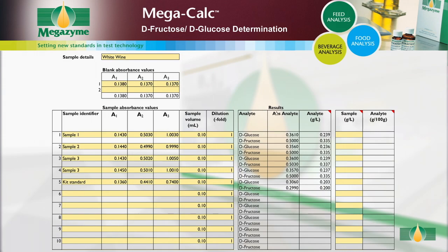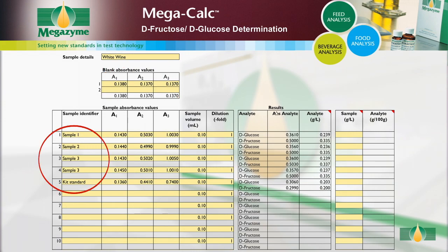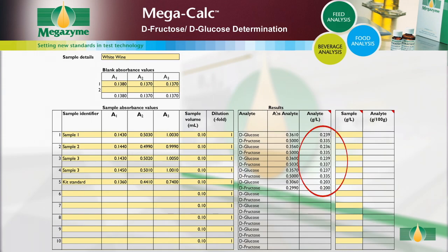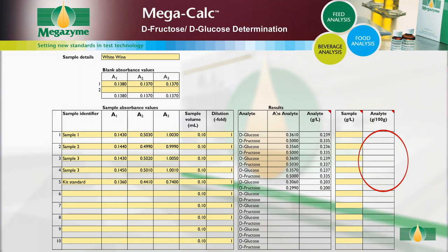Open the MegaCalc worksheet and input the following sample details: absorbance readings for the blanks, and for each sample, the sample identifier and the absorbance values. Alter the sample volume if a volume other than the default 0.1 millilitres is used. If dilution of the sample has been performed, input the dilution factor used; if no further dilution was performed, the dilution factor is 1. When all of the data has been entered, the concentration of D-Glucose and D-Fructose in the sample is automatically calculated and given as grams per litre in the original sample. For solid samples, input the concentration of the original sample extract in grams per litre; the concentration is then automatically calculated and provided as grams per 100 grams in the original sample.